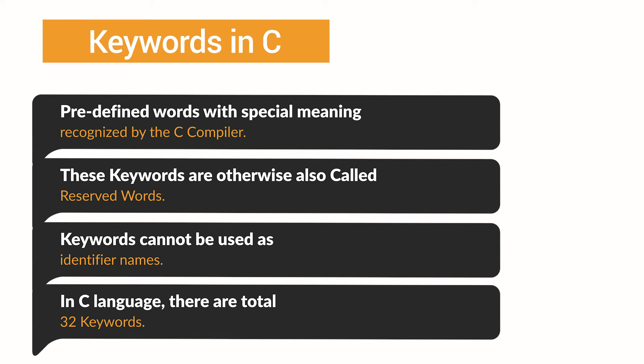The keywords used in C language cannot be used for naming variables or functions. In C language, there are total 32 keywords.